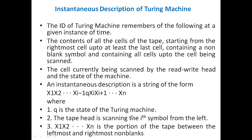We already know that a Turing machine has the advantage of using external memory, and by default it is deterministic. The difference between finite automata and Turing machines is that a Turing machine contains external memory, while finite automata do not.